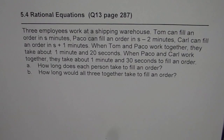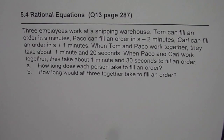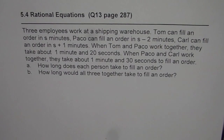Three employees work at a shipping warehouse. Tom can fill an order in S minutes, Pecco can fill an order in S minus 2 minutes, and Carl can fill an order in S plus 1 minutes. When Tom and Pecco work together, they take about 1 minute and 20 seconds. When Pecco and Carl work together, they take about 1 minute and 30 seconds to fill an order. How long does each person take to fill an order, and how long would all three together take?